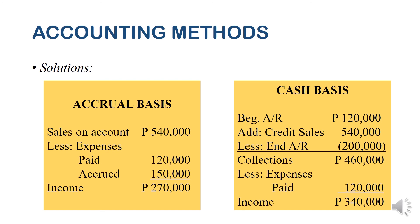So there is the difference between accrual basis and cash basis: under accrual basis, revenue is based on sales whether paid or unpaid; under cash basis, it is based on collections. I hope you learned a lot from this discussion and I hope you watch the next videos. Thank you for watching.